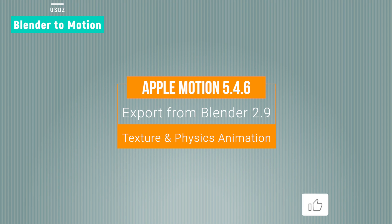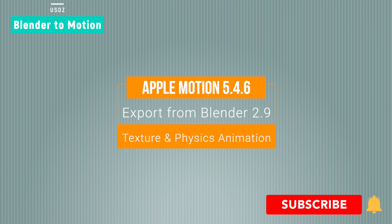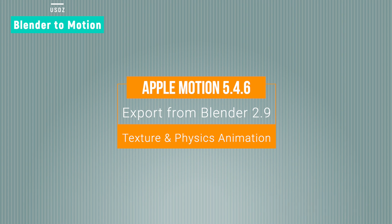Today I will teach you how to export texture and physics animation from Blender 2.9 into Apple Motion 5.4.6. I will design a Pepsi can and then apply material, texture, and physics animation. Then I will bake this physics animation into keyframes and export to USDZ format. I will import this file into Apple Motion for further animation and rendering.